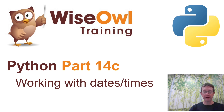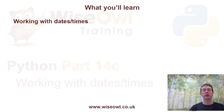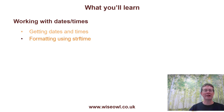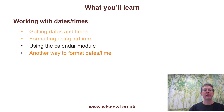Welcome to the third of the four-part series of tutorials on working with data types in Python. This part is going to look at dates and times. We'll firstly look at how you can get dates and times, whether you want to get today or a specific date or time. Then we'll look at how you can format them using the strftime function, and how you can use the calendar module, and also an alternative way to format dates using the calendar module.